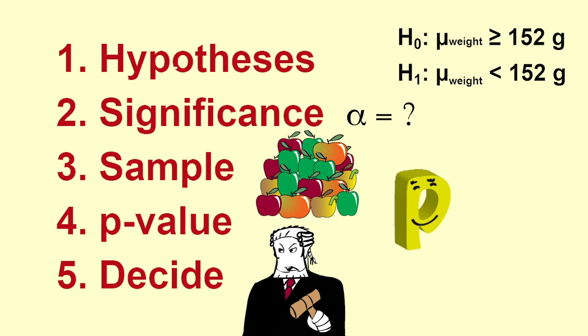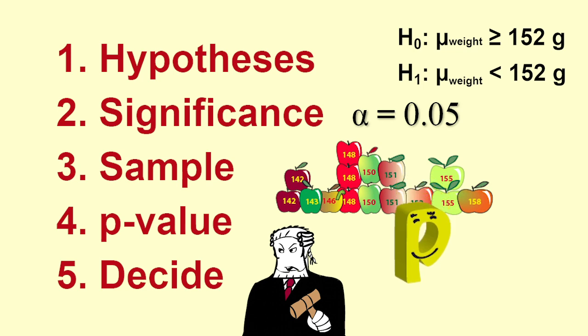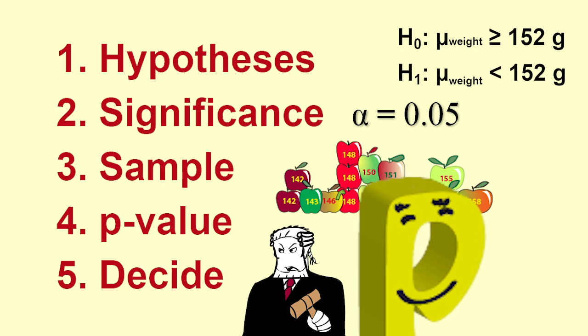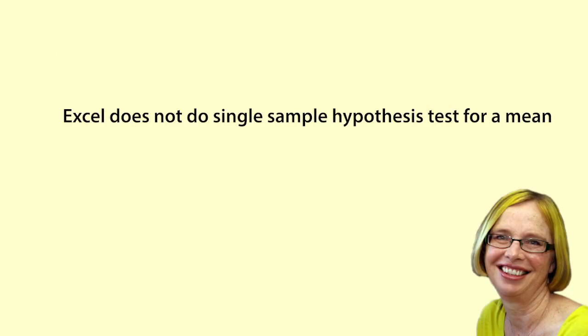We have our hypotheses. We will use an alpha value or significance level of 0.05, and we have a sample of 15 apples ready to analyse. So the next step is to calculate the p-value using Excel. Excel does not do single sample tests for a mean, so we need to be a bit sneaky.